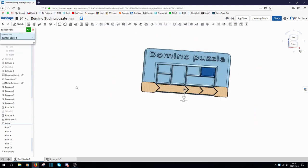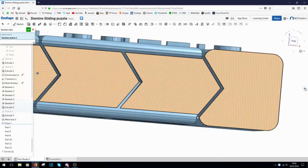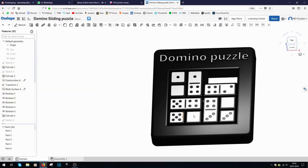In this section view you can see the gaps between the pieces. Those are supposed to prevent the pieces from sticking together during the print. Last but not least, I rendered the stickers which I wanted to look like domino bricks.